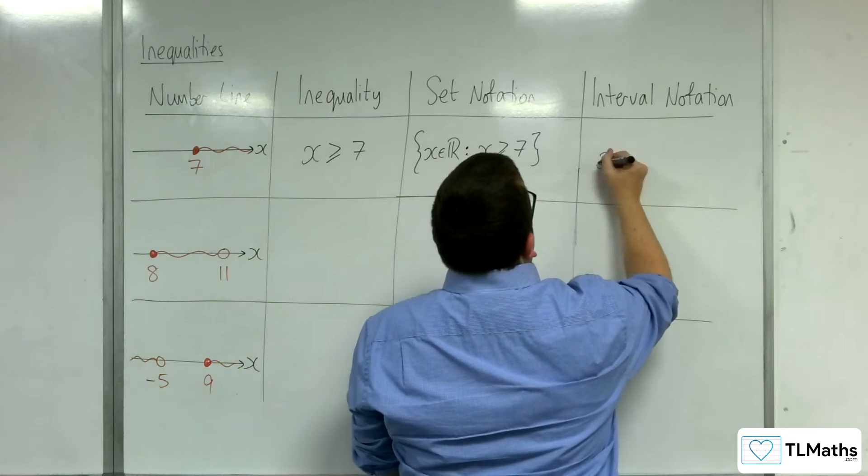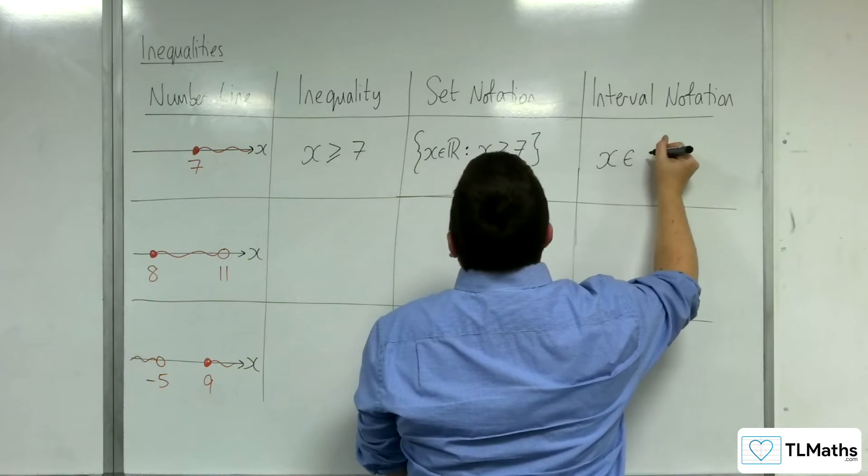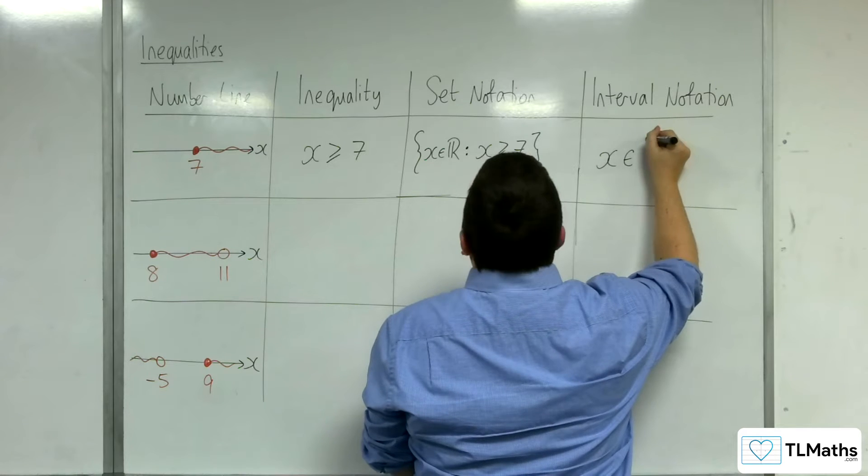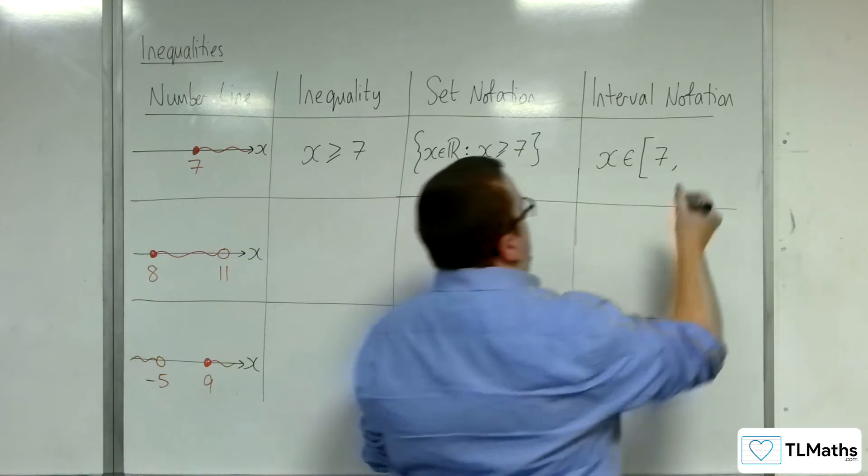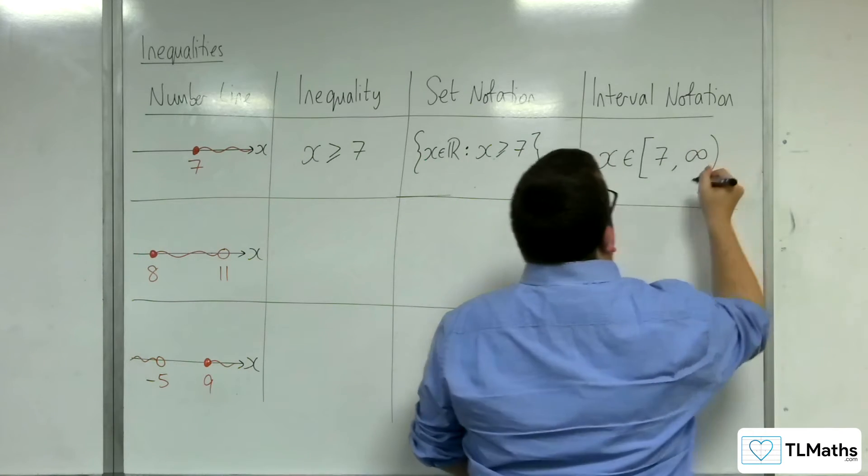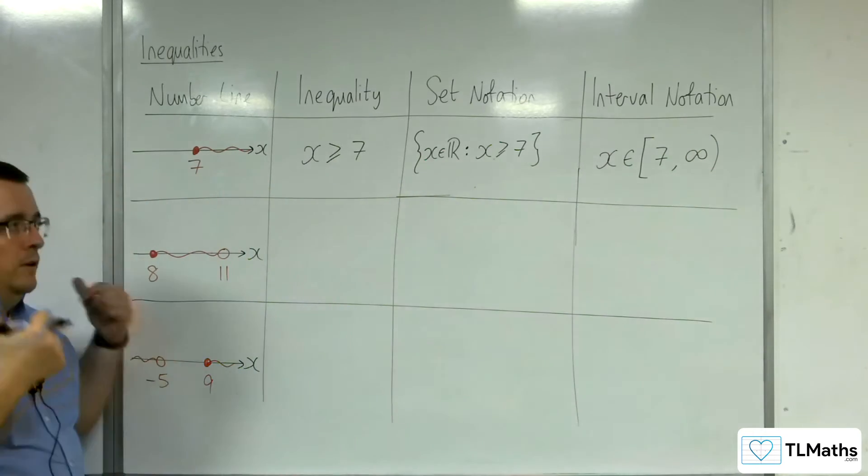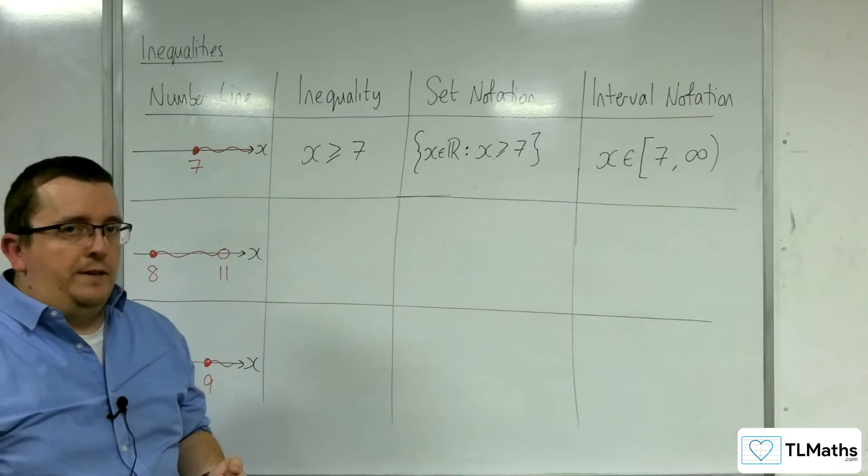For interval notation, we would be saying that x belongs to, so we can go from 7, including that, so that would be a square bracket, and it's going up to positive infinity. Curved bracket always for infinity.